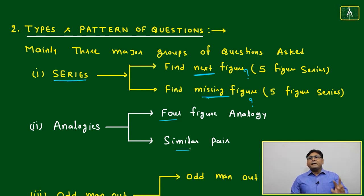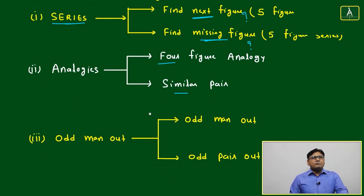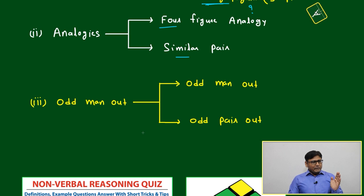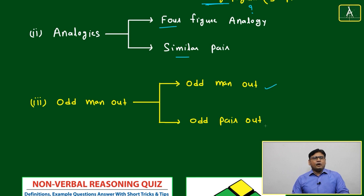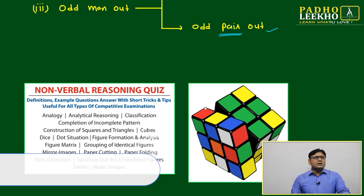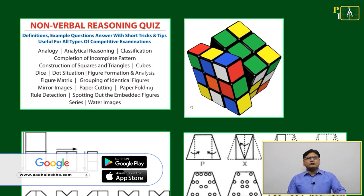Second is analogies. Four figure analogies or pair type of analogy. Four figures are given and you have to find the similar way what can be possible. Or pair wise, two pairs are given, one is missing, you have to find. Overall, you can say two types of questions: one is whatever pattern is given, you have to find the next. Another is based on the pattern, five or six images are given, anyone is missing, you have to find the missing one. These two major categories. Odd man out: again similar way, odd man out and odd pair out.